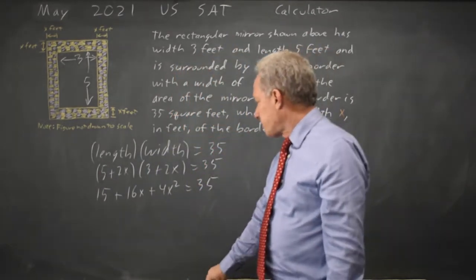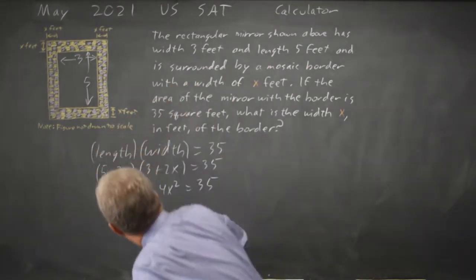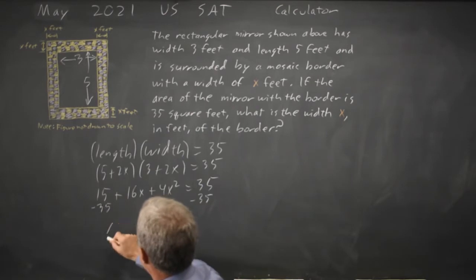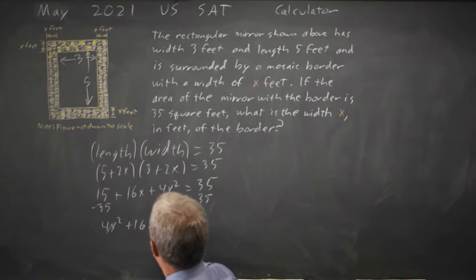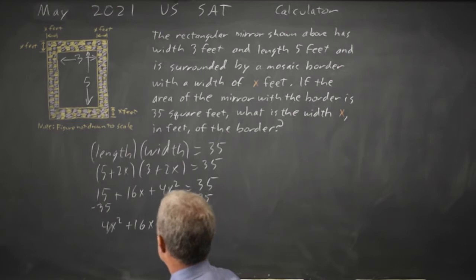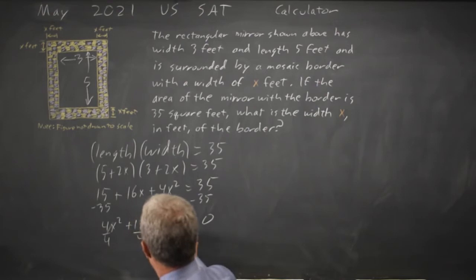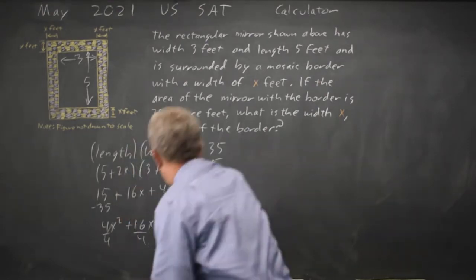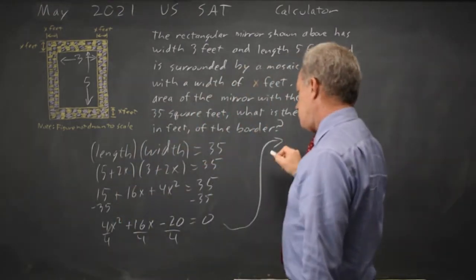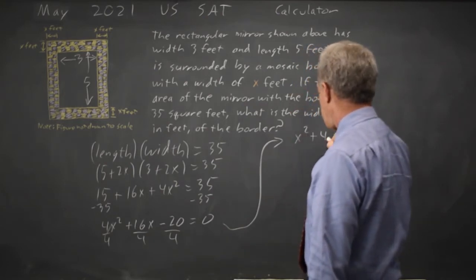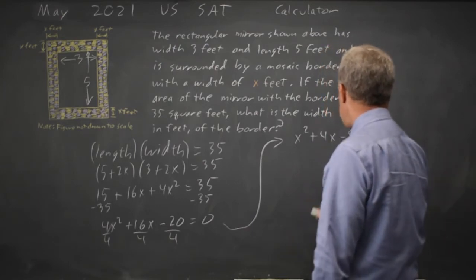I can solve this on my graphing calculator or I can move the 35 to the left. I get 4X squared plus 16X minus 20 equals zero. And those are all multiples of four, so I'll divide by 4 which gives me X squared plus 4X minus 5 equals zero.